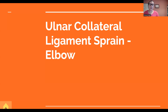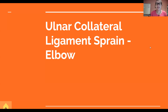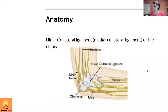Today we're going to be covering the ulnar collateral ligament sprain at the elbow. There is also an ulnar collateral ligament located down in the wrist with a different mechanism of injury, but the one we're discussing today is at the elbow. This is a sprain, which is a tear of a ligament. A strain, by contrast, is a tear of either the muscle or the tendon.